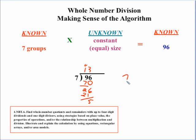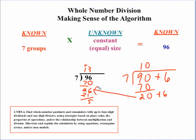To get a better handle and a better picture of that, let's rewrite this to where 96 is 90 plus 6. Well, how many groups of 7 can I get out of 90? That would be 10. So that would be 70.